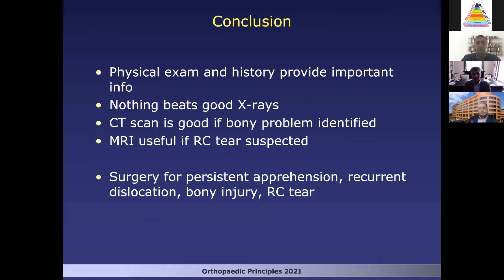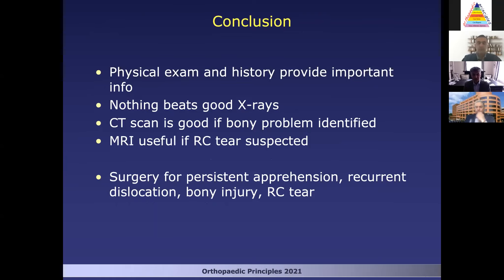So in conclusion, the physical exam and history provides very important information that you should not discount or glance over. Nothing beats good x-rays. If you have a bony lesion, a CT scan is usually my recommendation next to really quantify that in terms of surgical planning. An MRI is useful if you suspect a rotator cuff tear, and you can get an ultrasound as an alternative. For surgery, I would say for persistent apprehension, for recurrent dislocations, for any kind of bony injury, or for rotator cuff tears — those would be my indications for surgery. Thank you.